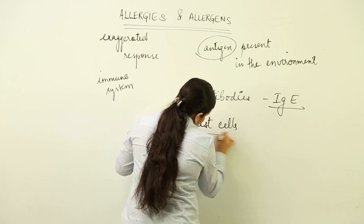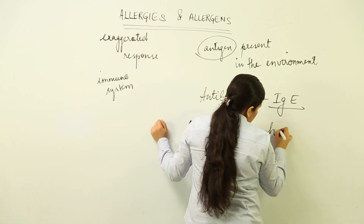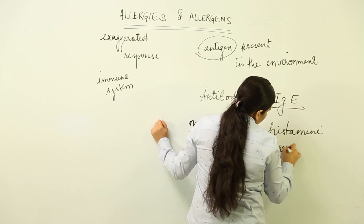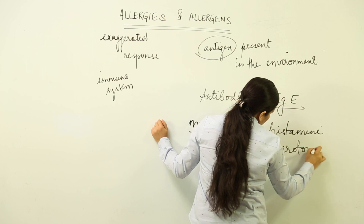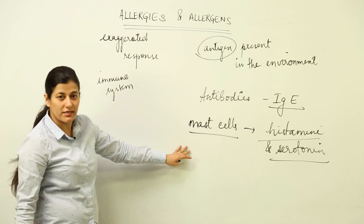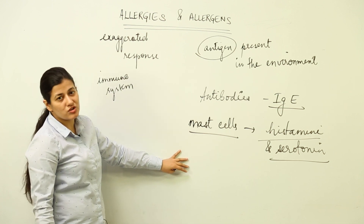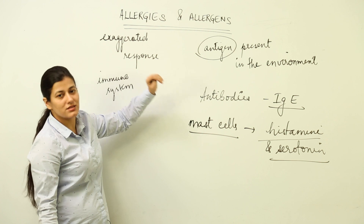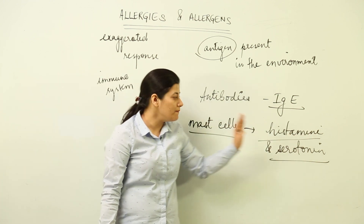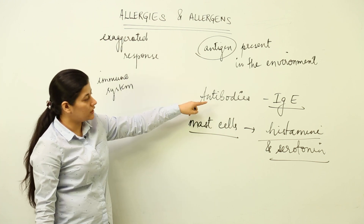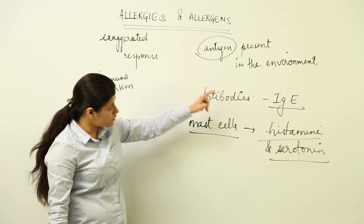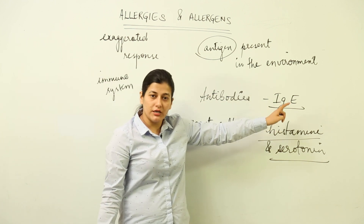Apart from that, the mast cells which are present produce chemicals like histamine and serotonin. Histamine and serotonin are produced by mast cells, which are responsible for the symptoms that the allergen brings about. The symptoms of allergy are produced by the release of histamine and serotonin by the mast cells against the allergen. The proteins that counter the allergen or antigen would be of the IgE type.